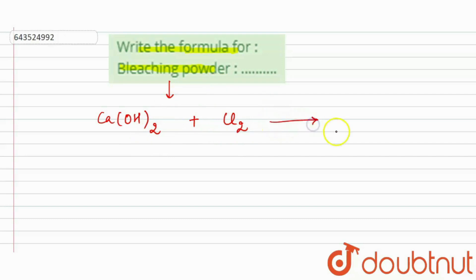So here it leads to the formation of CaOCl2 plus water. Water is also formed as the solvent in the formation of bleaching powder. So here this is the formula for bleaching powder.